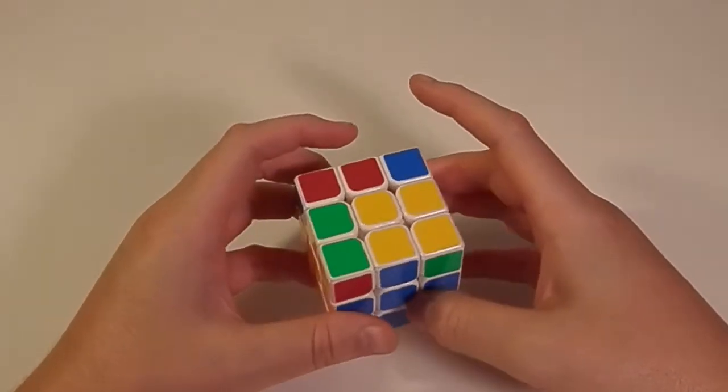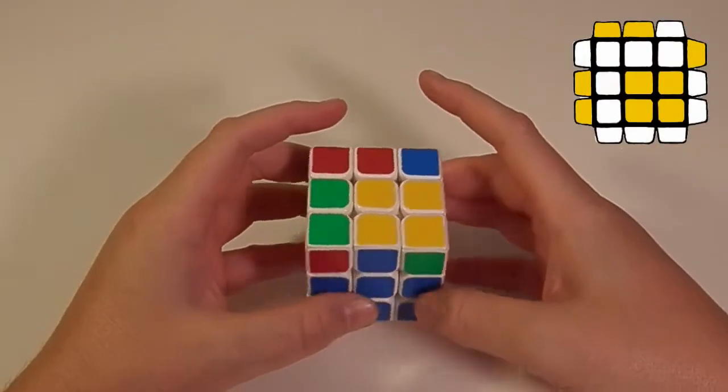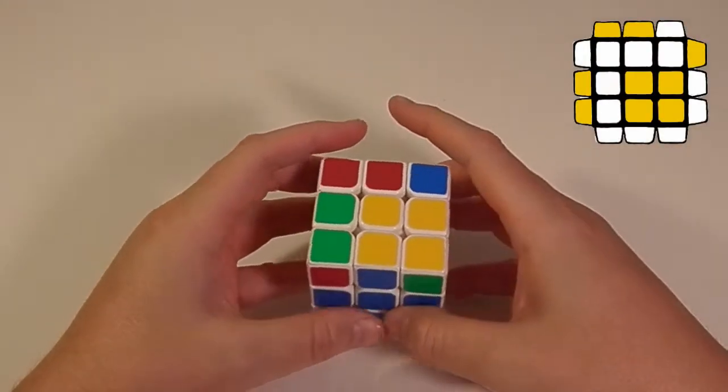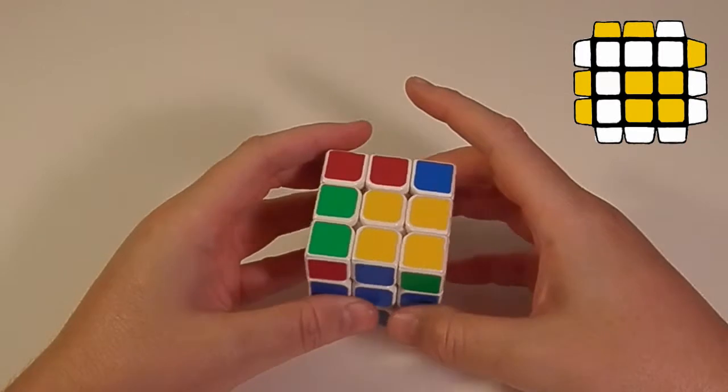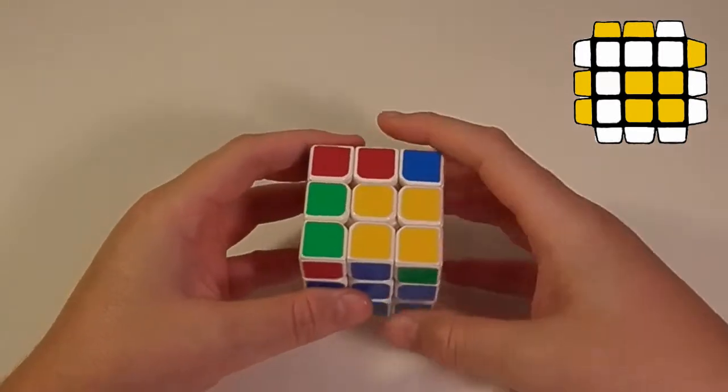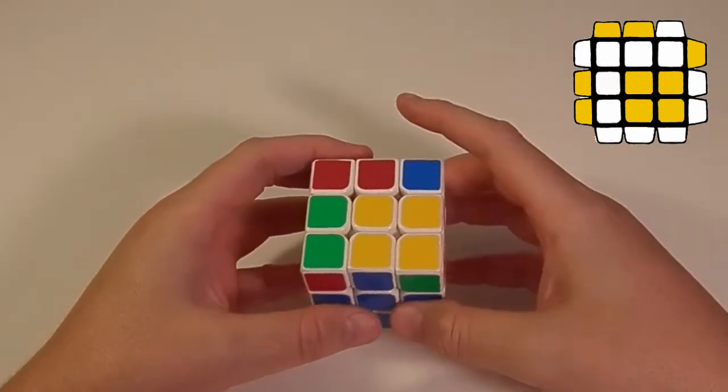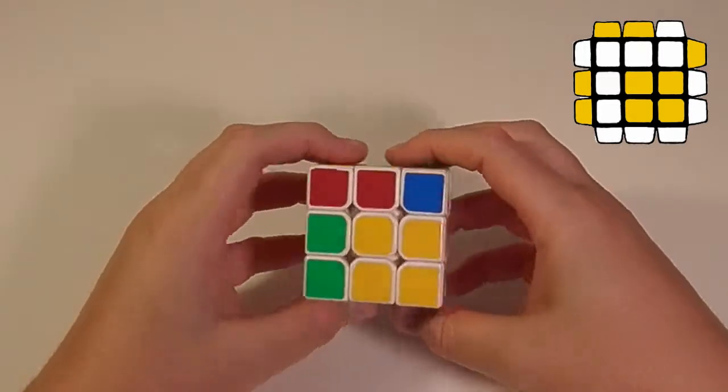So the first case we're going to be covering is reverse wide anti-soon. At least that's what I call it. The reason I call it that is because to get to this case from an oriented layer, you do wide anti-soon, and that will give you this so you can practice.